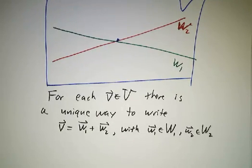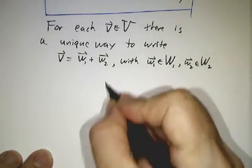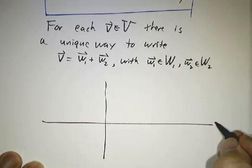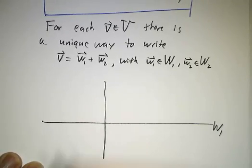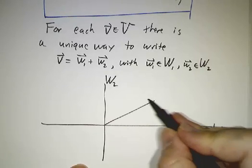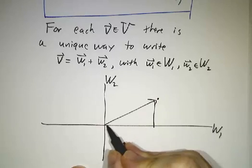Now this sounds a little bit weird, but in fact, this is what happens all the time. We're used to thinking about R2, for example. In R2, we might call the x-axis W1 and the y-axis W2. So then every vector in the plane can be written in a unique way as a sum of two pieces.